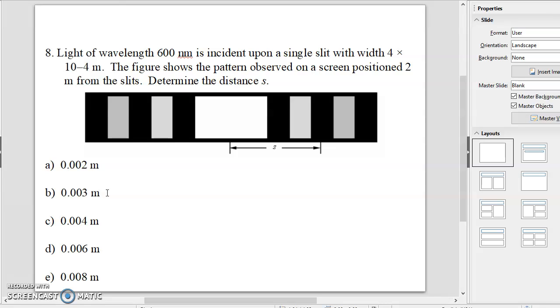The light of wavelength 600 nanometers is incident upon the single slit with four times ten to the minus fourth meters. The figure shows the pattern observed on a screen positioned two meters from the slit. Determine the distance S. And that is just a matter of applying the equations. And the answer is D, 0.006 meters.